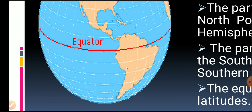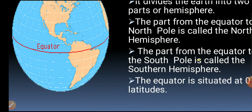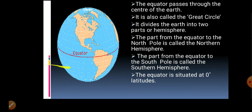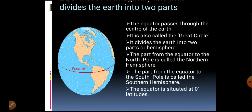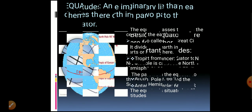The part from the equator towards the south is called the Southern Hemisphere. An important thing to note is that the equator is situated at zero degrees latitude, and another name for it is the Great Circle.